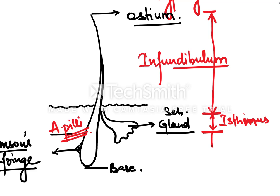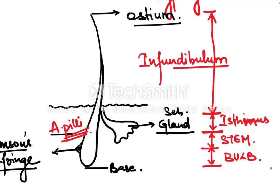Between the attachment of the erector pili muscle and the Adamson's fringe is the stem portion. The lower dilated portion between the Adamson's fringe and the base of the hair follicle is the bulb portion. So the hair follicle is divided into the infundibulum, isthmus, stem, and bulb.